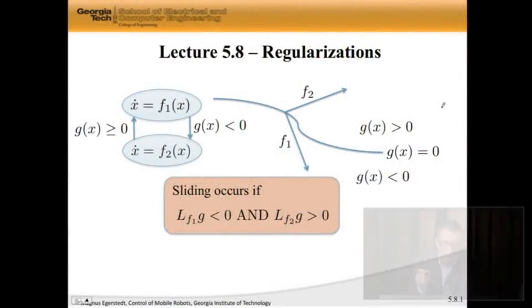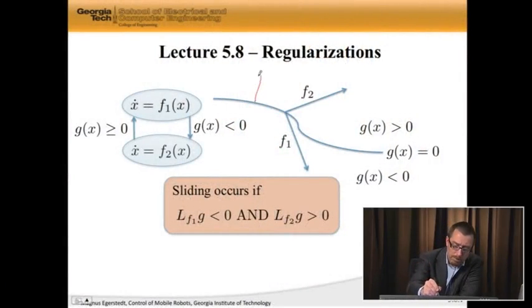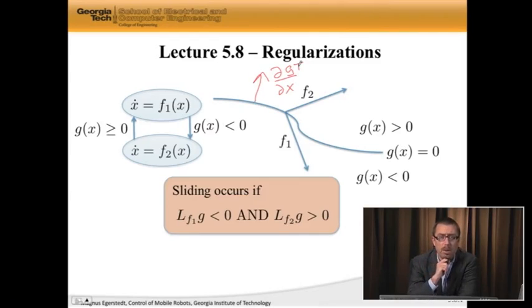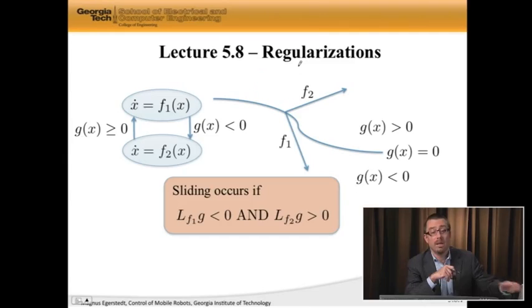So last time, we saw that we could actually test for type 1 Zeno. And the way we could test this was to see whether or not the gradient dg dx transpose points in the same direction as f2 and the opposite direction to f1. So if I had that, then I do have type 1 Zeno.